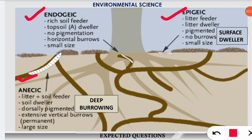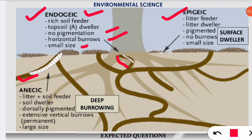The first is the endogeic kind of earthworm. Endogeic earthworms are very small in size and perform horizontal burrows — that is a characteristic feature. They have no pigmentation, meaning no pigment or coloration is found on their body. They are topsoil dwellers and are known as mineral-rich soil feeders.